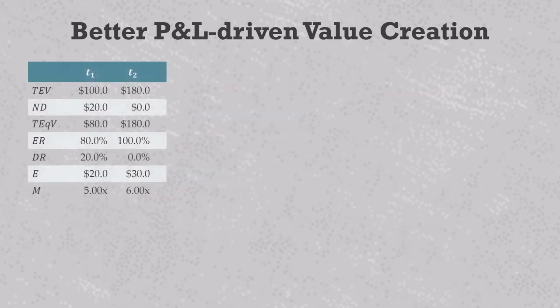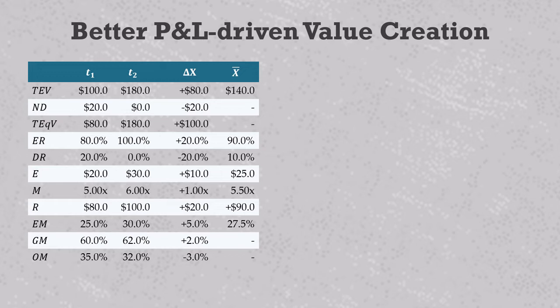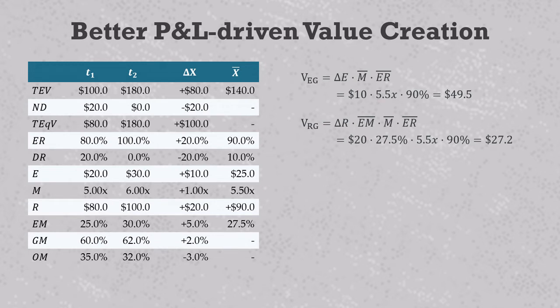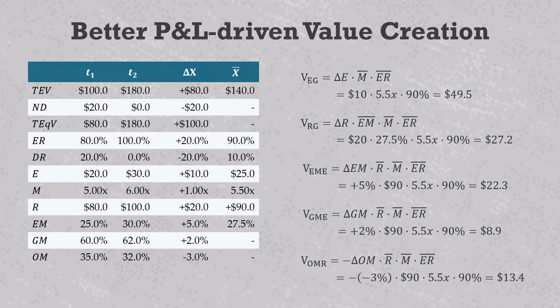This all makes intuitive sense, so let's calculate some values. We'll take the same company as before, but now add EBITDA margin, gross profit margin, and operating expense margin to the table. When we calculate all the deltas and averages, we see that the EBITDA margin goes up by 5%, the gross margin goes up by 2%, and the operating expense margin goes down by 3%. We expect all these movements to drive positive value creation. The EBITDA change of 10 still gives us EBITDA growth of 49.5. But now, inclusion of the average EBITDA margin in the revenue growth formula brings it from 99 million down to a much more reasonable 27.2. The 5% increase in EBITDA margin gives us EBITDA margin expansion of 22.3, and revenue growth plus EBITDA margin expansion adds up to the total EBITDA growth of 49.5. The 2% increase in gross profit margin gives us gross margin expansion of 8.9, and the 3% decrease in operating expense margin gives us operating margin reduction of 13.4, and these terms add up to EBITDA margin expansion of 22.3.